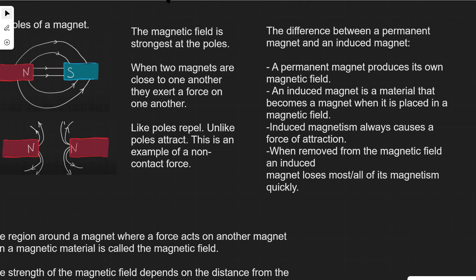Magnets can be two types: a permanent magnet or an induced magnet. A permanent magnet will produce its own magnetic field, whereas an induced magnet is just a material that becomes a magnet when it's placed inside of a field. An example of that could be iron or something like a paper clip that will get attracted to a magnet — it wasn't magnetic before it was placed in the field, but became a magnet once within the field.